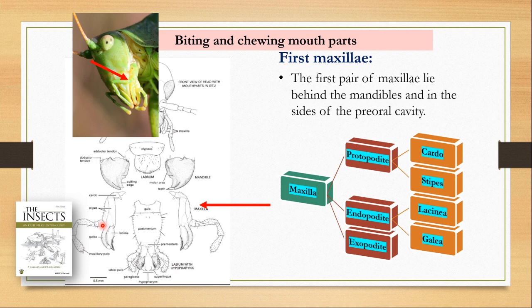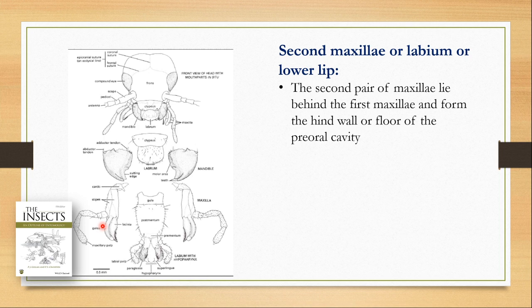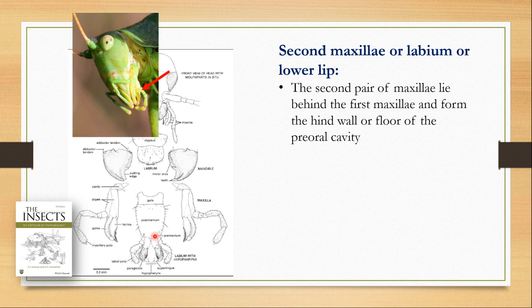The exopodite is made of the maxillary palp, which is connected to the protopodite by a structure known as palpifer. The labium, or second maxillae, is so called because it looks like a structure made by the fusion of two maxillae. It is known as the lower lip because it forms the hind wall or floor of the pre-oral cavity. Here in this grasshopper you can see the labium and the labial palp.